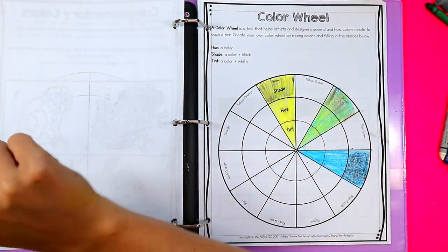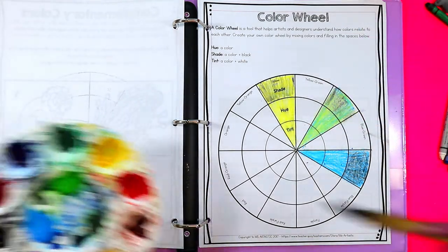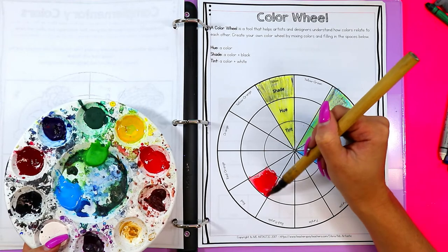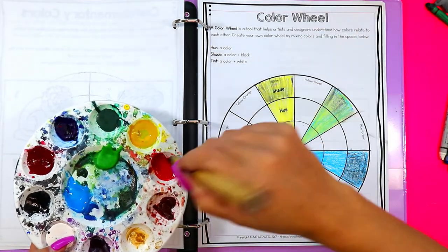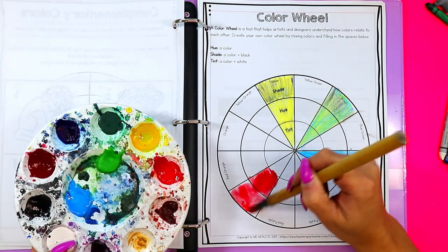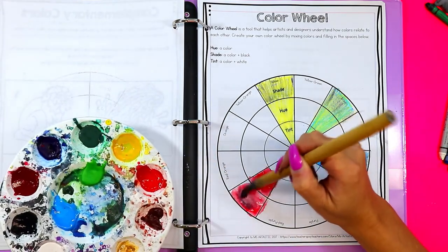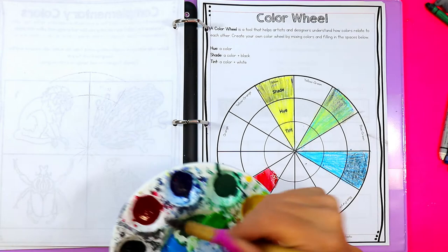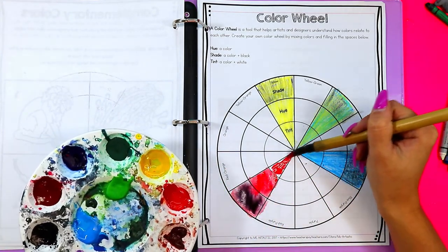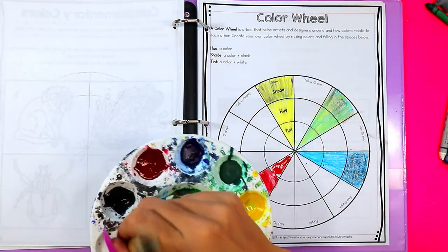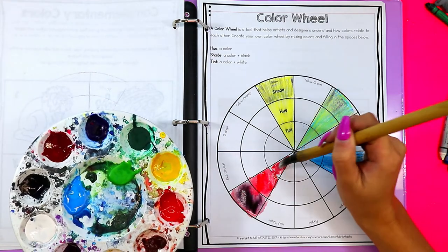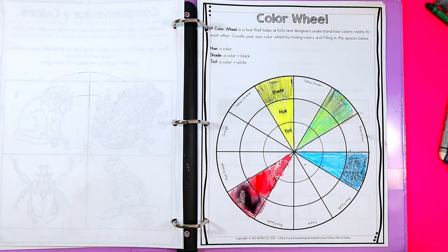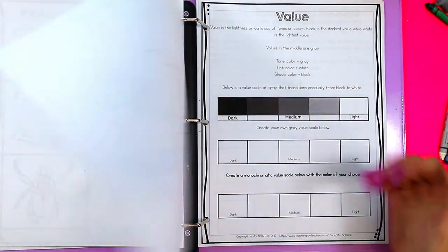Or if you wanted to use paint, no problem. We'll do, let's see, maybe we'll do red. So I'll do my hue, then I'm going to do red plus black, and then to make my tint, we need red and we'll add white. So lots of ways to use this resource. You can use oil pastel. It's up to you on what you want to use. Have fun and experiment with it. But it's a fabulous color wheel option.